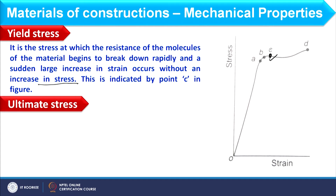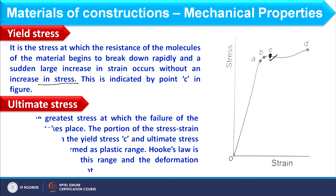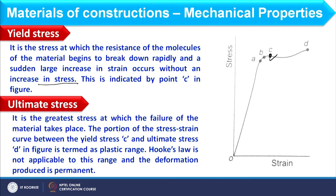After yield stress, we have ultimate stress (point D): the greatest stress at which failure of the material takes place. The region from C to D is the plastic region, where permanent deformation occurs, and Hooke's law is not applicable. These are the key properties considered in designing, and when to apply each will be discussed as needed.